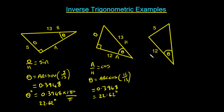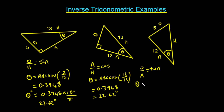Finally, in this third example we have the opposite, the adjacent, and the hypotenuse. We're looking at opposite divided by adjacent, which is the tan function. So the angle theta is going to equal the arc tan of the ratio 5 divided by 12.